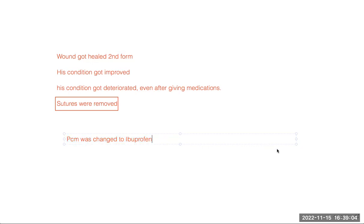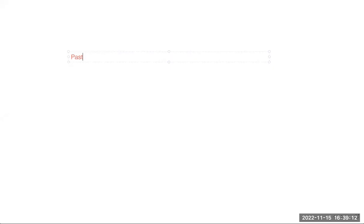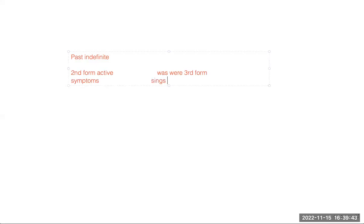So that is the difference between active and passive voice. To summarize: the most important tense in OET is past indefinite. Past indefinite active means second form; passive is 'was/were' plus third form. Symptoms are part of active voice. Signs, diagnosis, and treatment are majorly parts of passive voice. This is the best and easiest way to understand what OET grammar is all about.